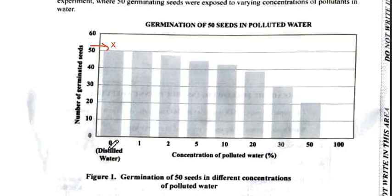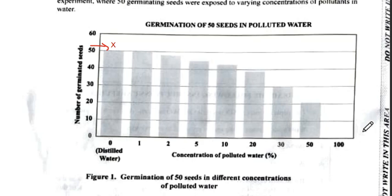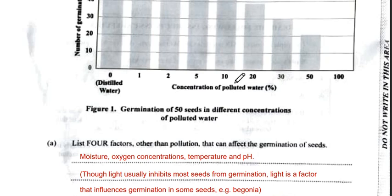We can see that we have the distilled water and the concentration of the water as a percentage. So without any pollutant we have 50 seeds, then we have concentrations at 1, 2, 5, 10, 20, 30, and 50 percent. Figure 1 shows the germination of 50 seeds in different concentrations of polluted water.